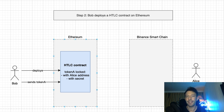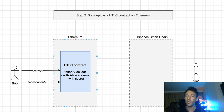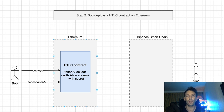Next, Bob will deploy a hash time lock smart contract on Ethereum and send token A to the contract. This HTLC contract is coded to release token A to Alice only if she knows the secret. But at this stage she doesn't know the secret yet. The hash we calculated previously is used to check that the sender of the transaction knows the secret. I will show this in more detail in the next section when we code the HTLC contract.